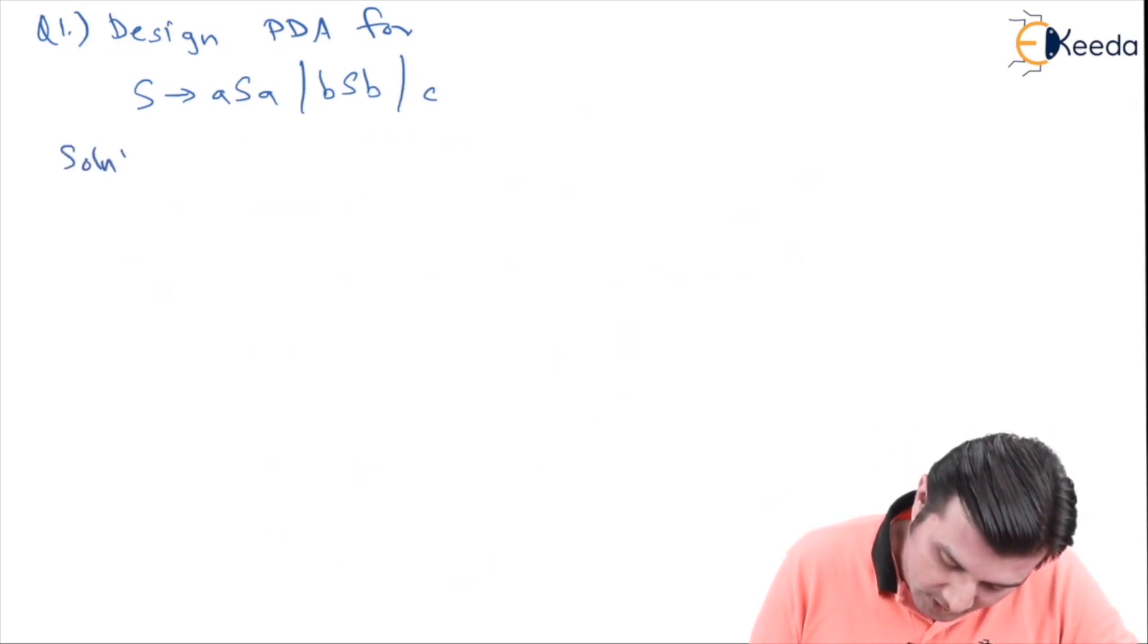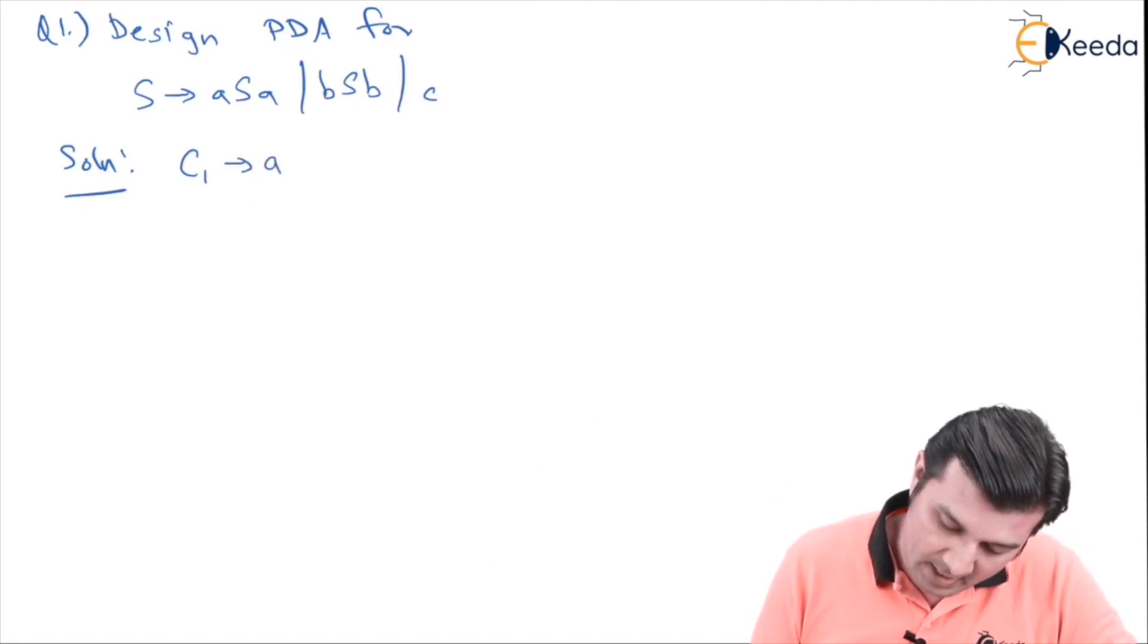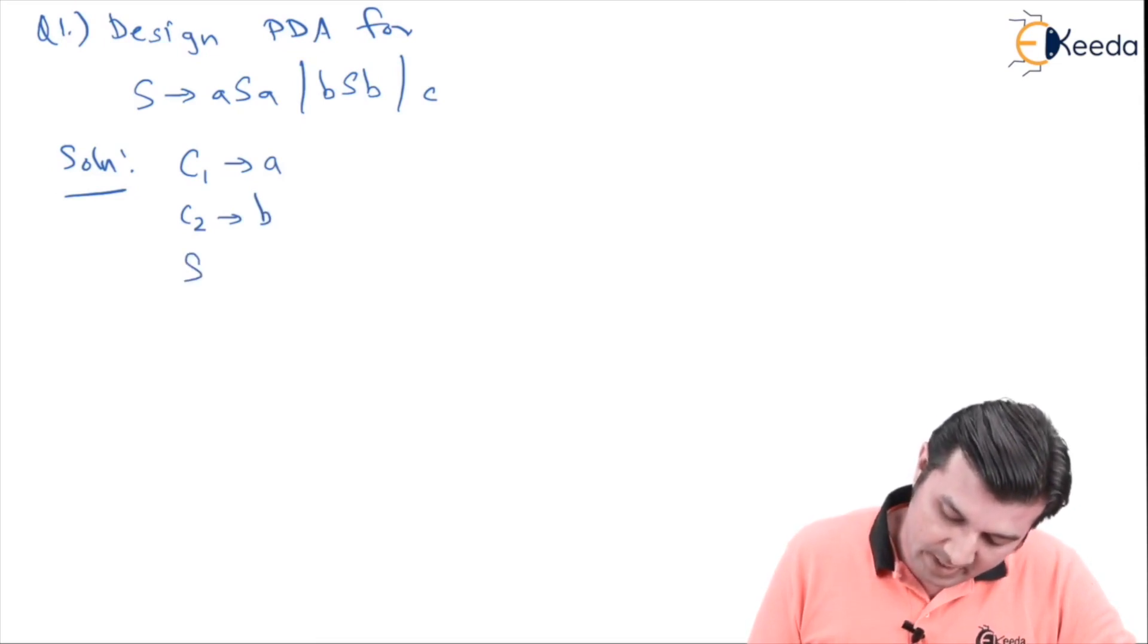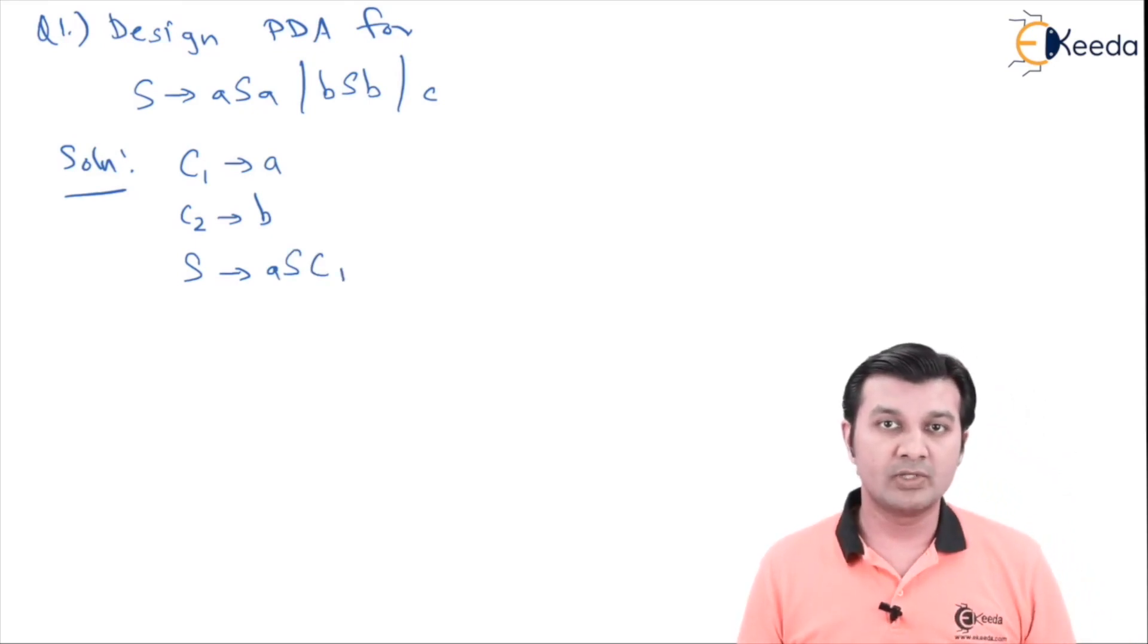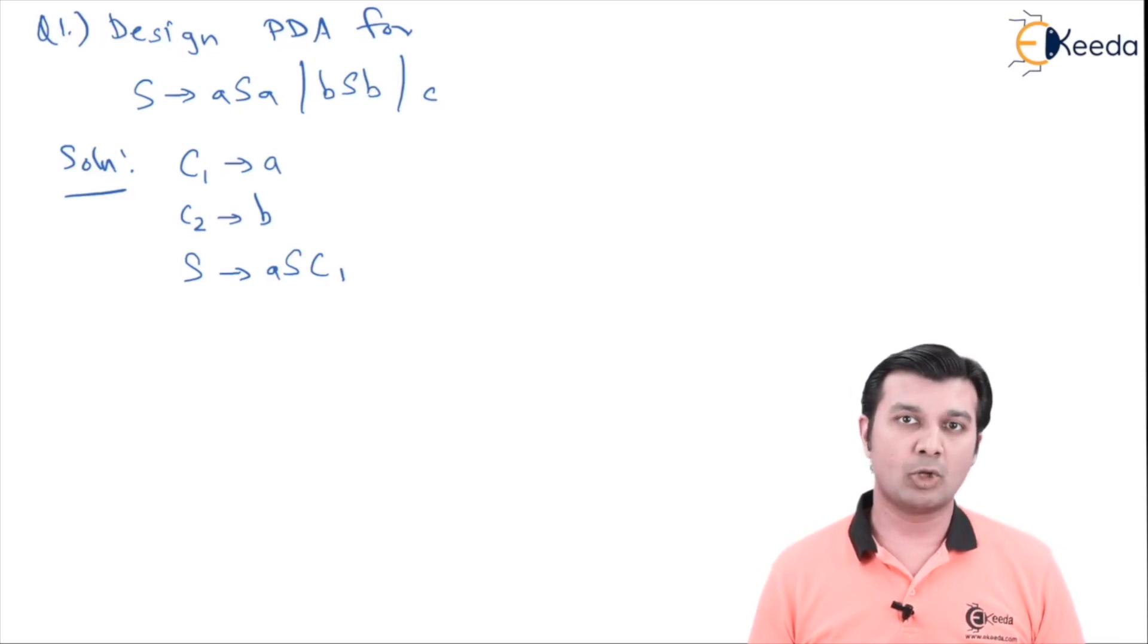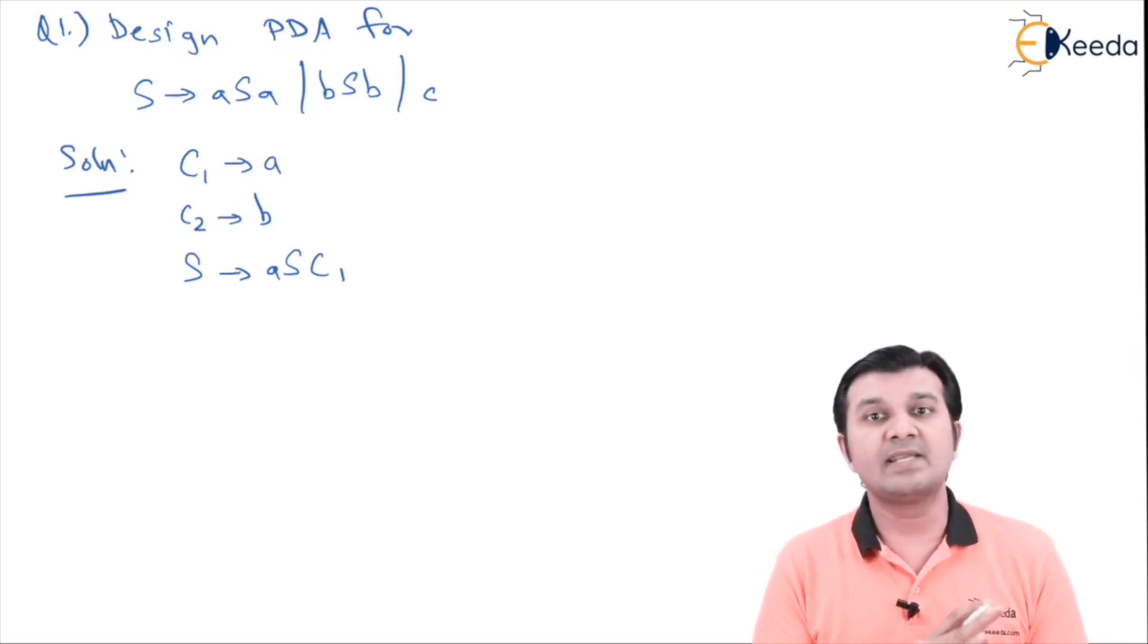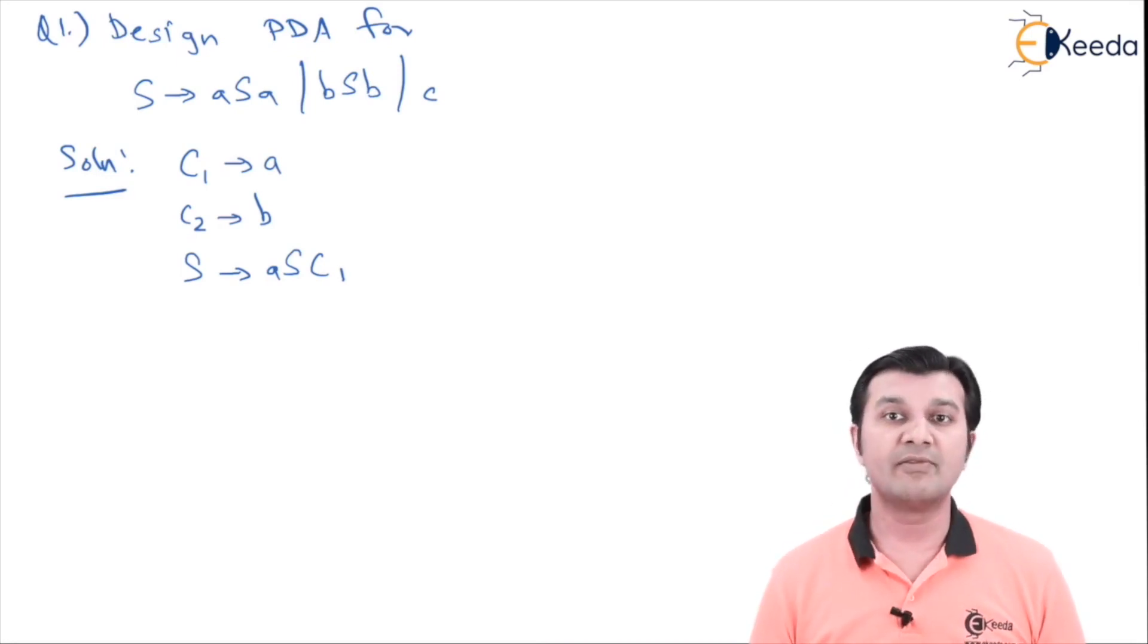And therefore I say in the solution, let my C1 be deriving small a and C2 be deriving small b, which makes my S converted to a S C1. Yes, I know the question over here is why have we not replaced for first small a also, because we want it in the form of GRVBACK normal form. We are keeping the first terminal as it is and rest everything we are getting it converted to alpha with the help of C1 and C2 respectively.